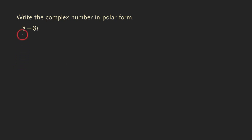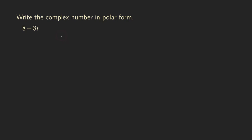Hello everyone, it's Wilson here. Today I want to talk about how to write a complex number in the polar form. You can see that this number is written in the rectangular form, and we can write it as 8 minus 8i as x plus yi.